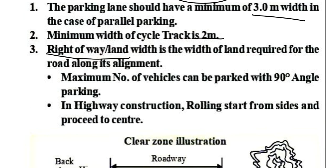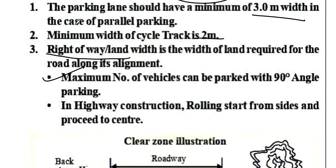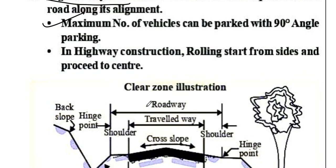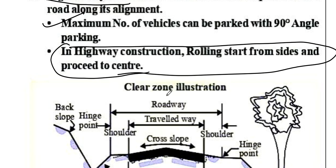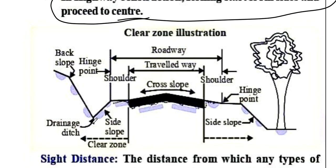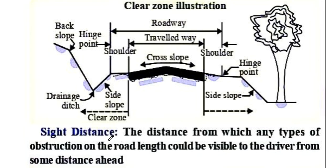For maximum number of vehicles, the 90-degree angle parking system is used. In highway construction, we look at the highway clear zone, which includes side slope, shoulders, cross slope, travelway, and roadway. These are important MCQ topics from previous exam questions.